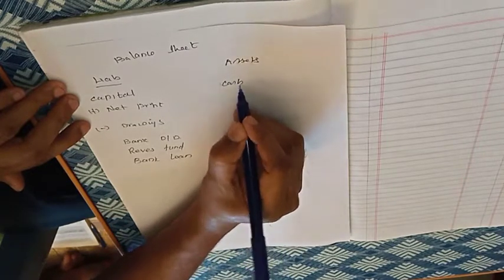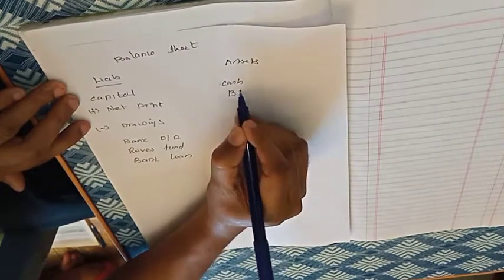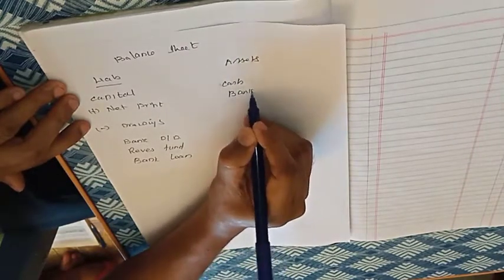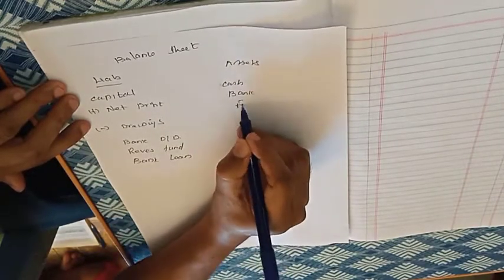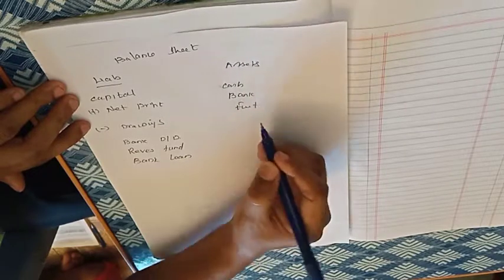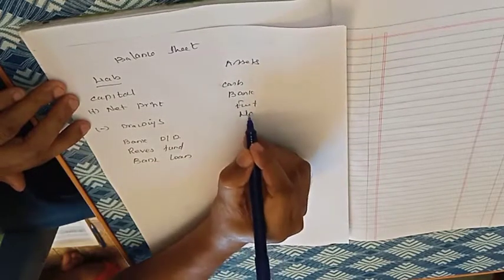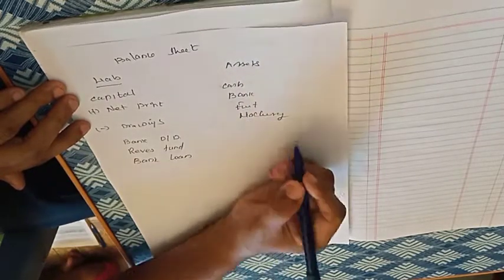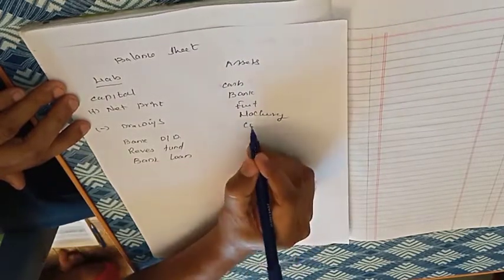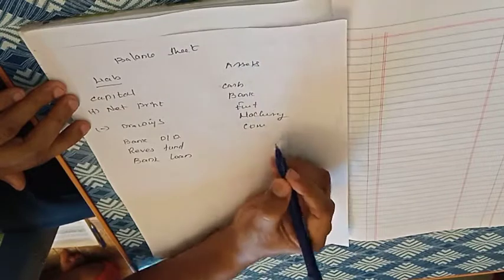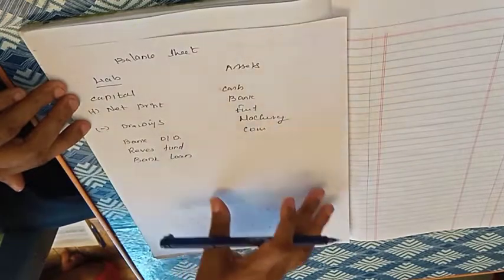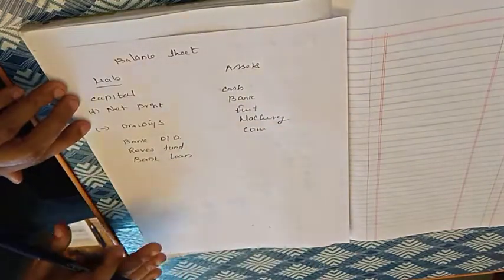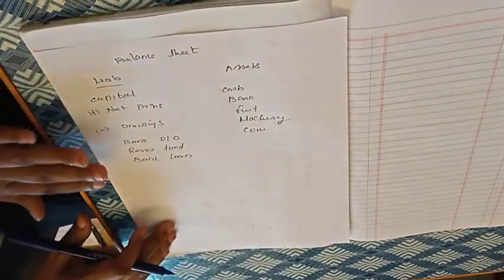On the asset side of the balance sheet we have: cash, bank, furniture, machinery, and computer. This is the basic structure of the balance sheet.